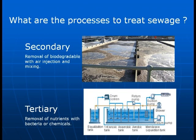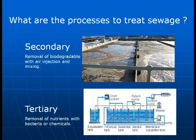Then there's secondary treatment, which is best described as the removal of biodegradable components of sewage with air injection and mixing. What you're doing is giving the bacteria — the bugs in the system — an environment where they can consume the nutrients of the biodegradable material under ideal conditions. So with air injection and mixing, the bugs in the sewage consume the biodegradable material. You then want to separate the bugs from the liquid and put that in a settling pond where gravity separates the water from the solids.